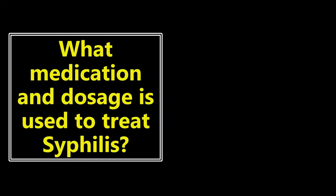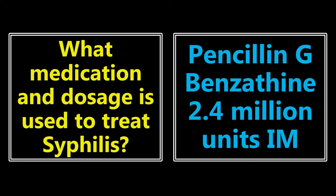What medication and dosage is used to treat syphilis? We all probably know it's going to be some type of penicillin, but that's not enough. We want to know the dosage and how it's administered. It's going to be penicillin G benzathine, 2.4 million units IM. That is how you treat syphilis — just one administration in the early stage, and weekly for three weeks in later stages. If a patient has a severe allergy to penicillins, doxycycline can be used as an alternative.